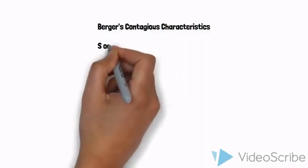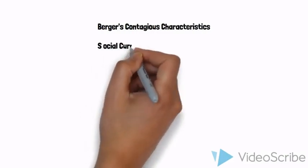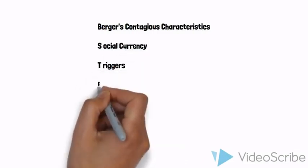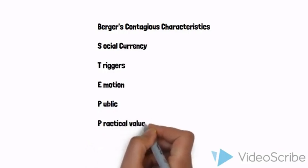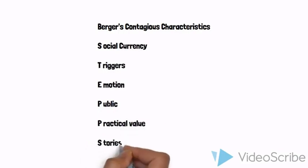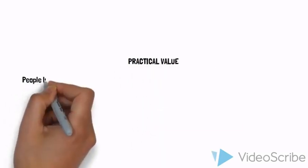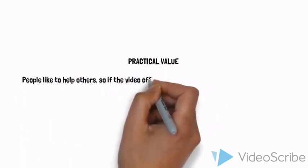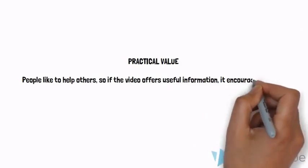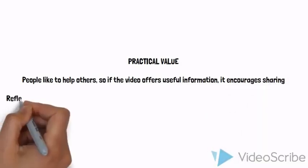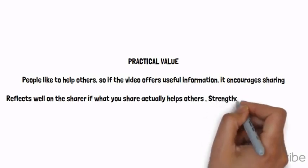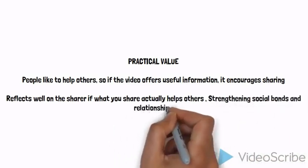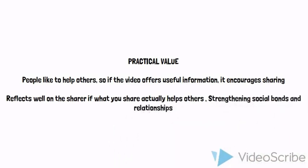But upon learning about STEPPS, I had to raise the question: how can I use this theory to improve the virality of an e-learning video? I found that the contagious characteristic particularly applicable to e-learning videos is practical value, as the goal of this genre is to teach people useful information, which encourages sharing. Practical value in an e-learning video is based on, one, its subject matter and, two, how engaging the content of the video is.